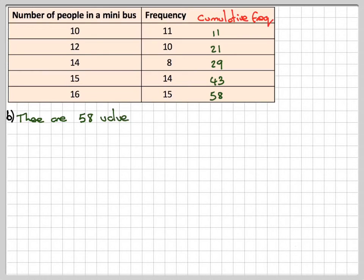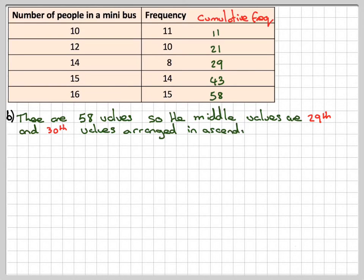Now the median, there were 58 values, so the middle values are going to be the 29th and the 30th values. There will be two middle values because there are an even number of items, 58.